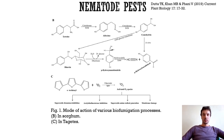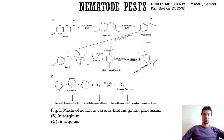Unlike brassicas, sorghum-sudangrass and sorghum-sudangrass hybrids are heat and drought tolerant and grow during summer; they also drastically suppress both monocot and dicot weeds. However, they can express allelopathic properties to following cash crops such as tomato, lettuce, and broccoli. In sorghum, the concentration of nematicidal compounds can reach 30% of dry weight in shoot tips and decreases with plant age; therefore, this crop should be incorporated when 1–2 months old.